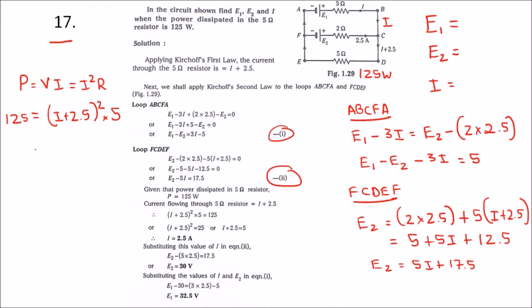When we rearrange, we will get (I plus 2.5) squared equals 25. When we take the square root, we will get 5.